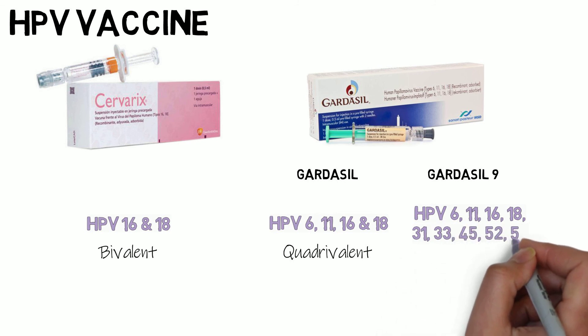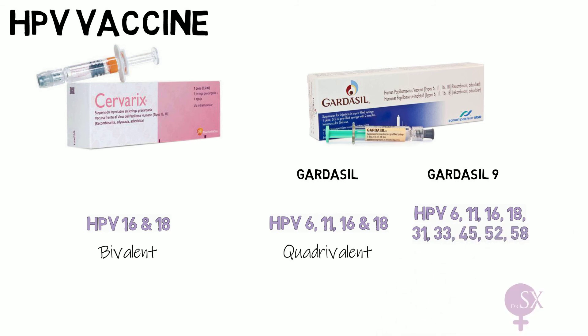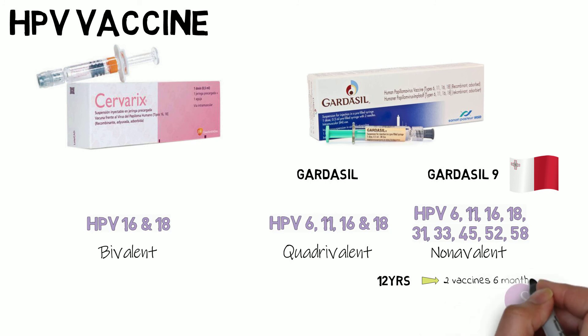Gardasil 9 covers HPV types 6, 11, 16, 18, 31, 33, 45, 52, and 58, making it a nonavalent vaccine. In Malta there is a national vaccination program using Gardasil 9, given to girls aged 12 to 14 in schools. They receive two doses of Gardasil 9 six months apart.